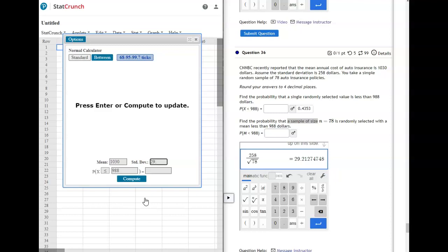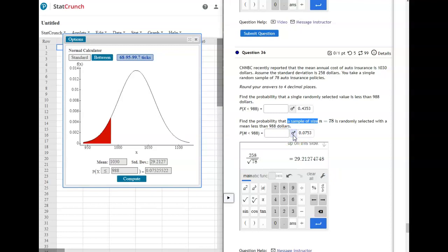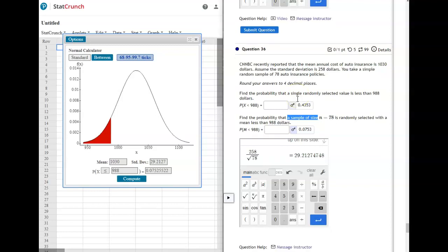And go out a couple decimal places. I usually go out three or four and then you can round after you plug that in. So now your answer is going to be 0.0753. So that's when you're talking about a sample instead of just a single thing.